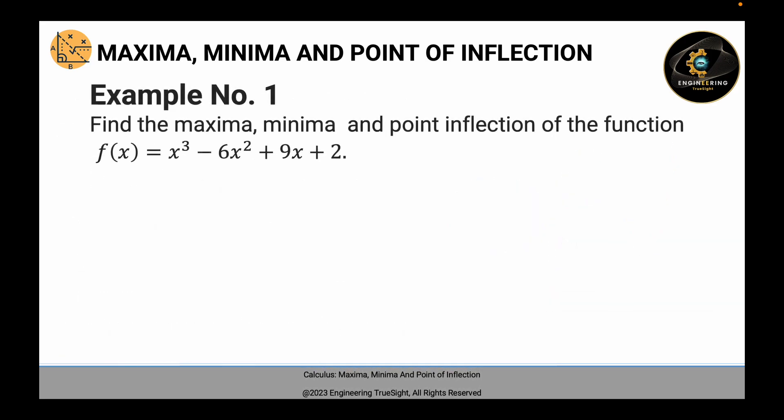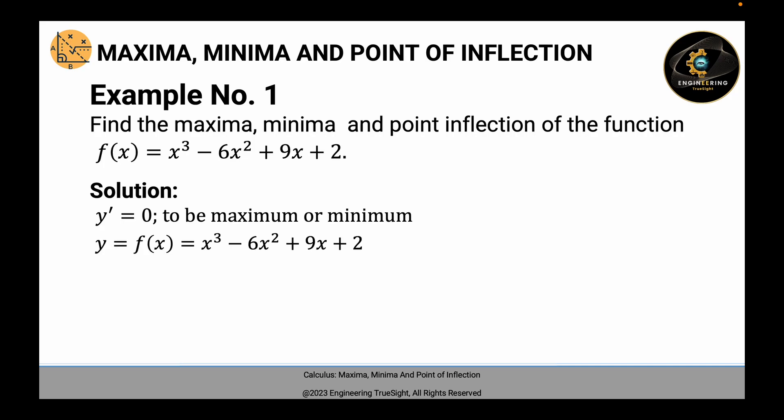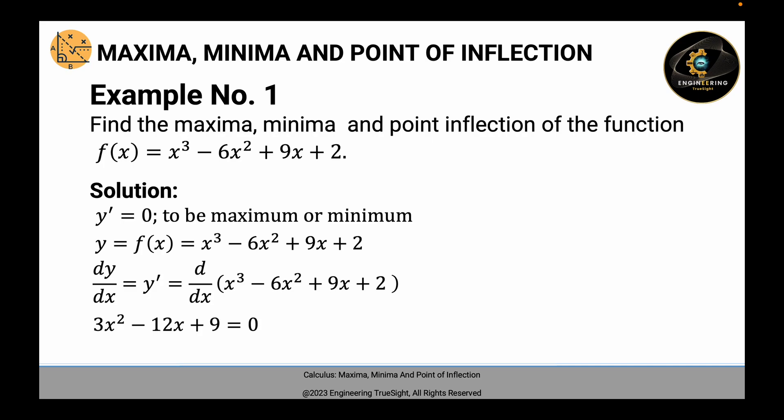Let us take example number 1. Find the maxima, minima, and point of inflection of the function f of x equals x cubed minus 6x squared plus 9x plus 2. We shall equate y prime equals 0 to get the maximum and minimum value. We have y equals f of x equals x cubed minus 6x squared plus 9x plus 2. We find y prime, which equals the derivative: 3x squared minus 12x plus 9 equals 0.